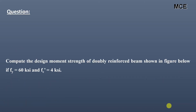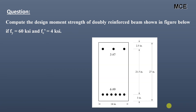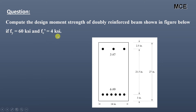Hello and welcome to the Master Civil Engineering. In this video, we will calculate the design moment capacity of a doubly reinforced beam. The question is given, and in this case we have to compute the design moment strength of a doubly reinforced beam shown in the figure below, if the grade of steel is equal to 60 KSI and the grade of concrete is equal to 4 KSI.